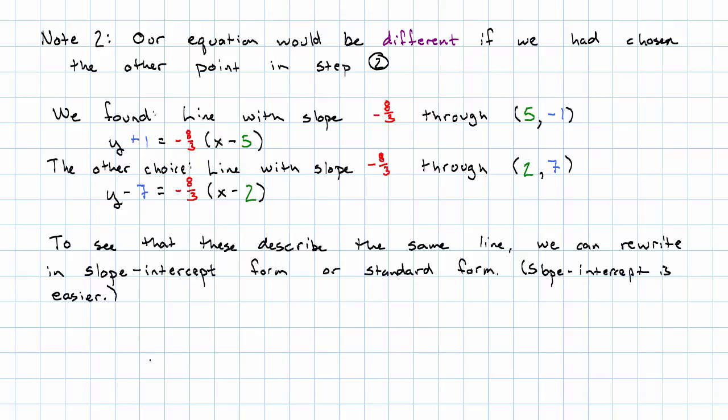For a given line, there's only one equation in standard form. There's only one equation in slope-intercept form. But there are lots of different equations in point-slope form. There's one for every point on the line. So let's just check this out with this example.